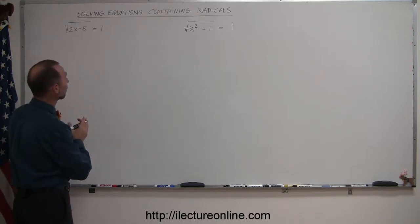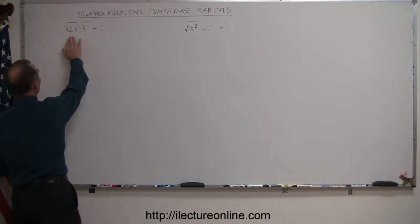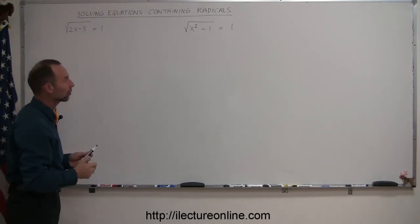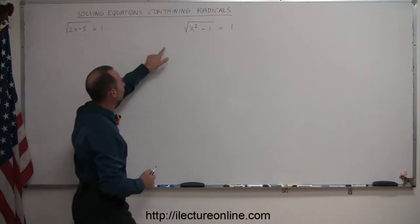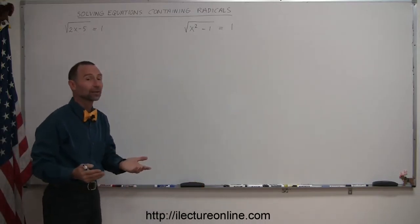Starting with these, notice that we have an equation. We have a left side, a right side, an equal sign that constitutes an equation, but there's also a radical sign in there. So in order to solve these equations for x, we first have to get rid of the radicals.